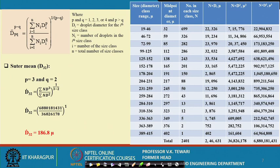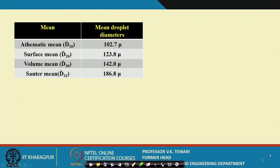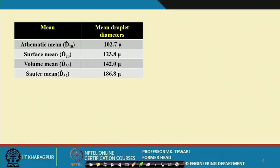For the Sauter mean, p equals 3 and q equals 2. The two summations are already given, and since p minus q equals 1, you just divide them to get d_32. This is how you get all the different diameters. So for this droplet data, arithmetic mean is d_10, surface mean is d_20, volume mean is d_30, and Sauter mean is d_32 — all values are now known. This gives a methodology to classify and understand the different diameters of droplets deposited on the canopy or target.